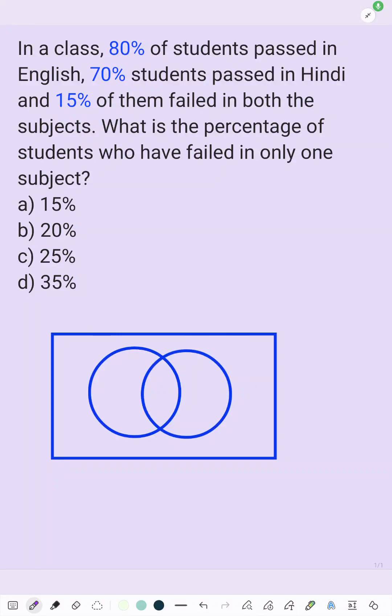In a class, 80% of students passed in English. So, English pass percentage equals 80%. Likewise, Hindi pass percentage equals 70%. This is pass percentage.